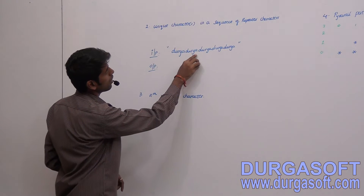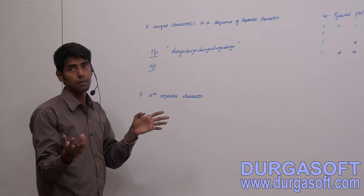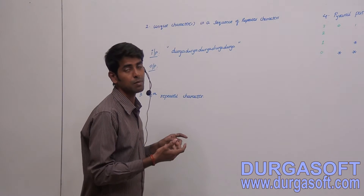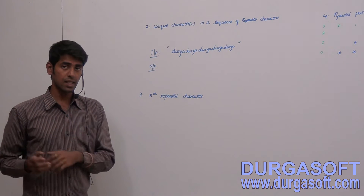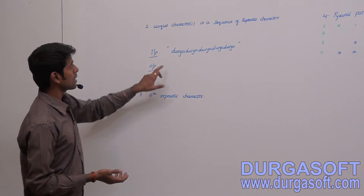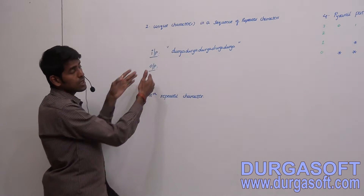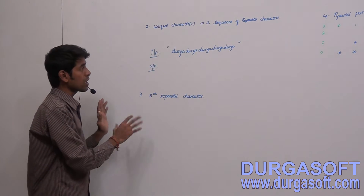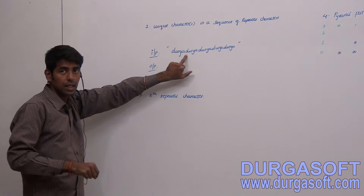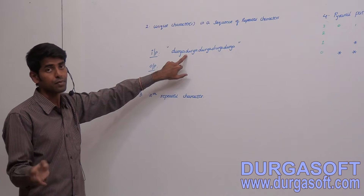Think that this is the string — 'durgadurga' — it is getting repeated, but we have to find the unique characters. You might think of different ways, but the key logic is: the characters which are getting repeated should not get inserted into a particular instance that is meant to hold only unique characters.